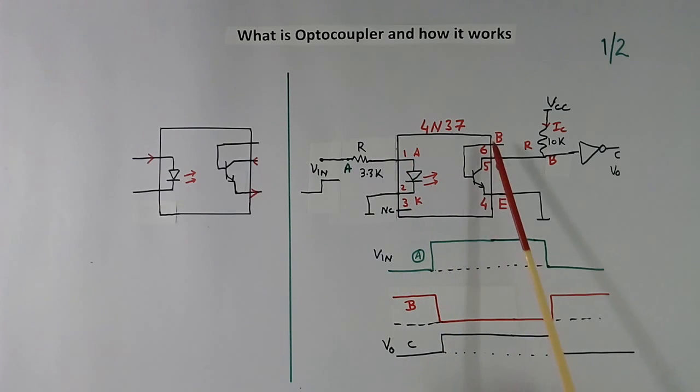It has 6 pins. Pin number 1 is anode, this is cathode. This is NC, NC means no connection, but we can ground this. This point is collector, this is emitter, this is base.